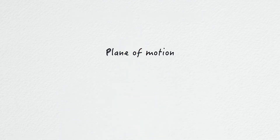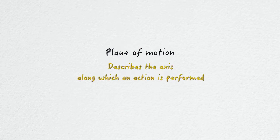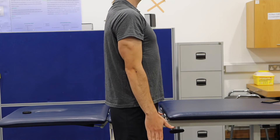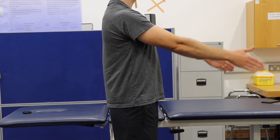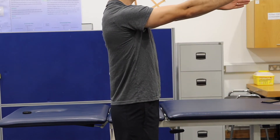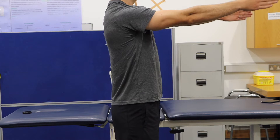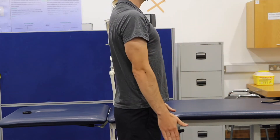It is parallel to the ground which in humans separates the superior from the inferior, or put another way, the head from the feet. When describing anatomical motion these planes describe the axis along which an action is performed. For example, if a person flexed their shoulder at the glenohumeral joint, their shoulder would be moving through the sagittal plane. Now that we have covered the planes and axes of movement, we will now outline how to describe that movement.